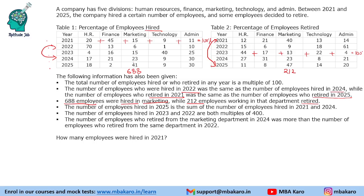This is the crucial part — marketing is the only department for which we are given the numbers. The number of employees hired in 2025 was the sum of the number hired in 2021 and 2024. The number of employees hired in 2023 and 2022 are both multiples of 400. So let us start with the hired part and calculate using variables a, b, c, d, e.